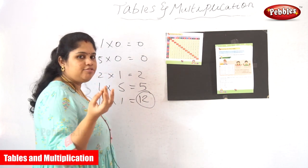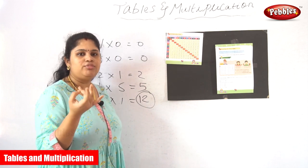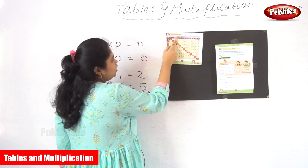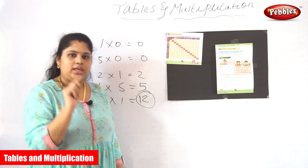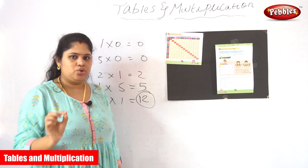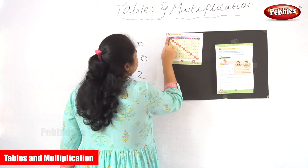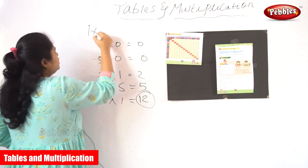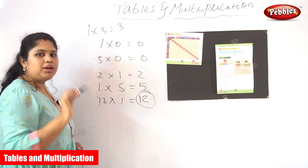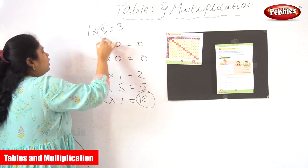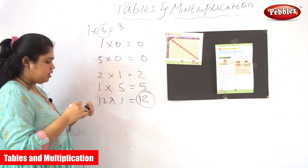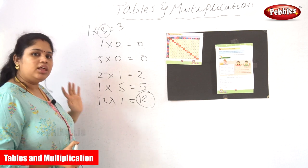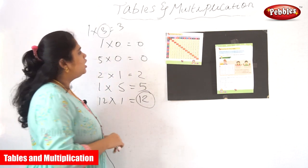We have finished the 0 and 1 columns, and we are moving to the third one. So 0 into 3 is 0 — any number multiplied by 0, the answer is 0. 1 into 3 is 3 — any number multiplied by 1, the same number is the answer. That is the second number after 1.